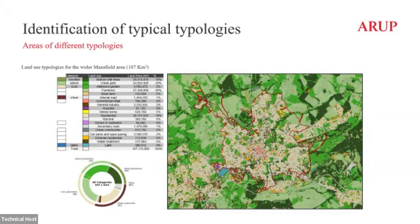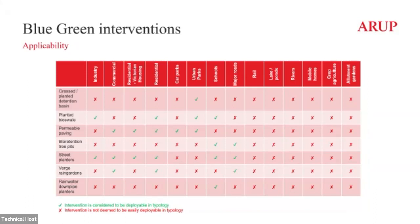From this classification we can see it's a mixture of green space and Victorian residential and industrial land uses. The next thing we did was identify, for those typologies, what blue-green interventions are applicable. We looked at detention basins, planted bioswales, down to street planters and verge rain gardens, and made an assessment with Severn Trent and other collaborators about the suitability of those typologies for those specific types of interventions.